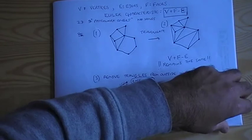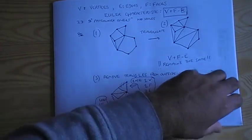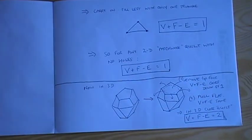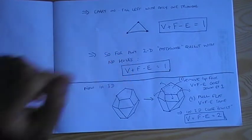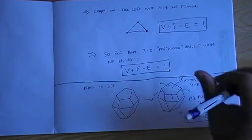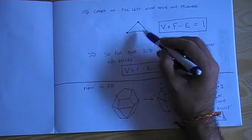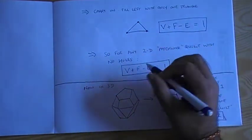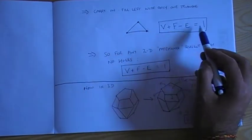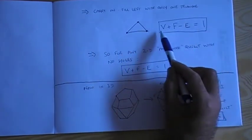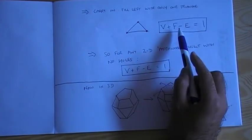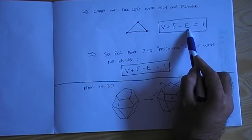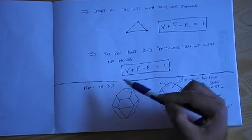So now, if we carry this process on of removing triangles, what's going to happen? We're going to be left with only one triangle at the very end. And if we count up for a single triangle, V, F and E, we find that V plus F minus E is equal to 1, because there are three vertices, one face, and three edges. So you just do the sums, and you get 1.